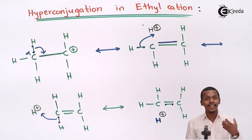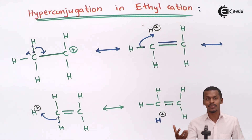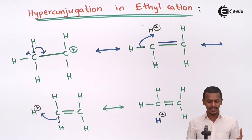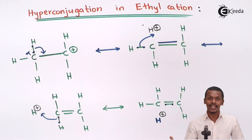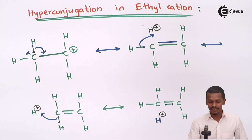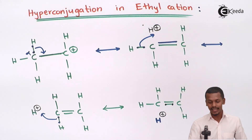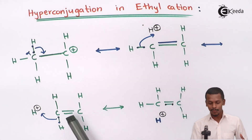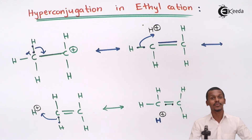CH3 or methyl groups show a +I effect — they give their electrons to the atom which carries the positive charge. That is the reason that, in that context also, we can say that the ethyl cation is more stable because of the presence of the methyl group. In terms of hyperconjugation as well, the more resonating structures that are obtained, the more stable the particular compound is.